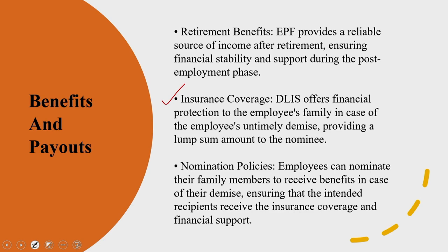This allows for a planned distribution of the benefit among dependents — for example, you can give a portion to the spouse and a portion to parents. There is also a possibility to update nominations.